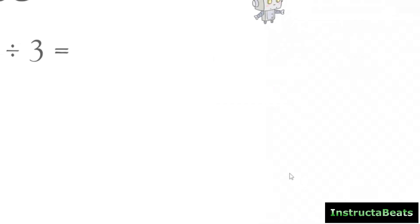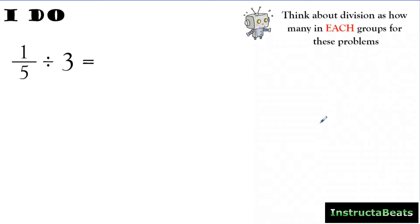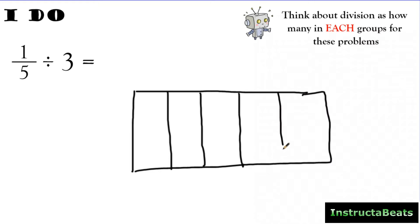Here we have an I Do problem. For this type of problem, when your fraction is your dividend and you're dividing it by a whole number, it makes it easier to think about division as 'how many in each group.' We know we're going to be dividing 1 fifth into 3 groups, and we're looking for how many are in each group. First, I want to draw a nice big area model to represent one whole, and then split it into 5 equal groups vertically.